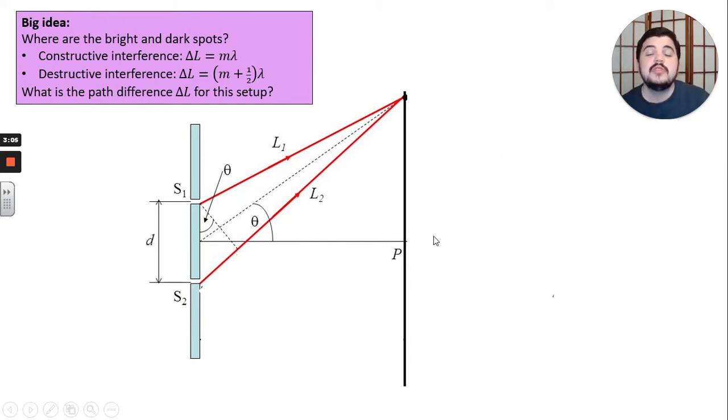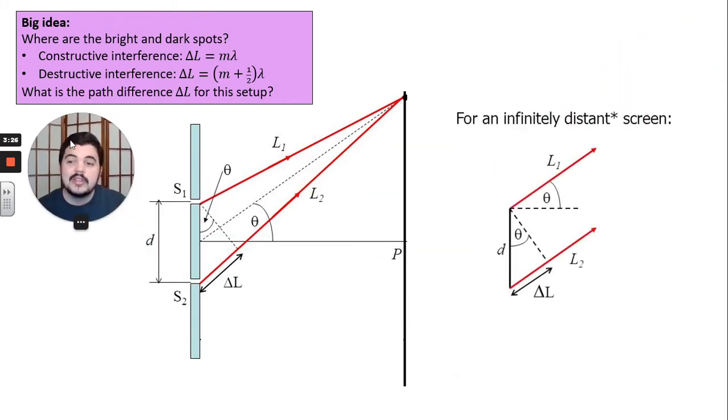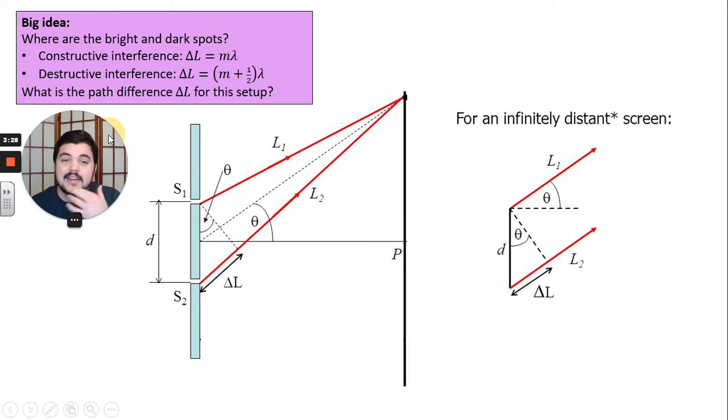The distance between the two slits, let's label it as lowercase d. And then here is the path difference. If we drop a perpendicular down from slit one to the path of wave two, this amount here is the difference in the path lengths between L1 and L2. And we are going to pretend that the screen is very, very far away.